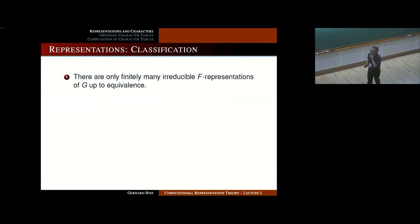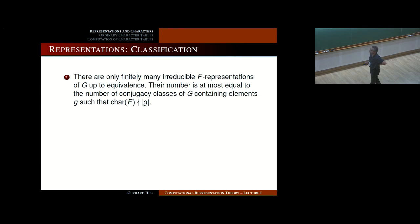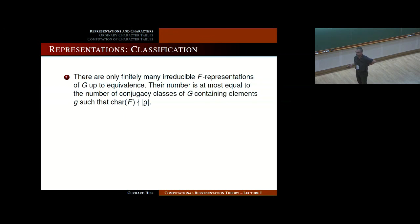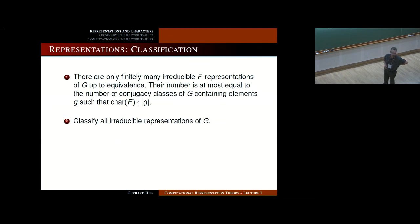Here are some basic facts about representations. There are only finitely many irreducible F representations of G up to equivalence. The number of these is bounded by a group-theoretic invariant: the number of conjugacy classes of G if the field has characteristic 0, and the number of conjugacy classes of G containing elements whose order is not divisible by the characteristic of F otherwise. The basic question in representation theory for a given finite group G and field F is to classify all irreducible representations of G, up to equivalence.